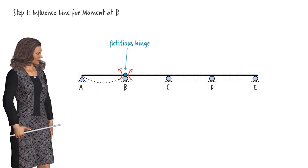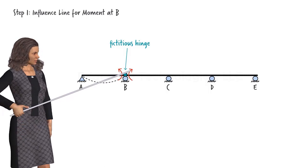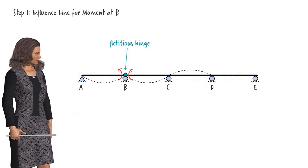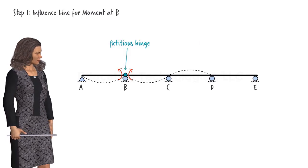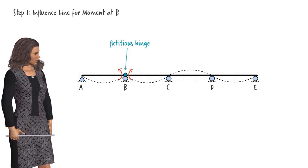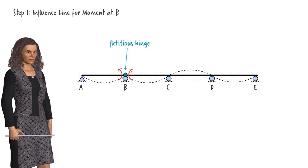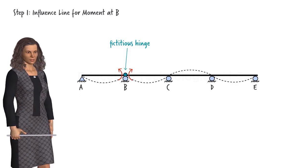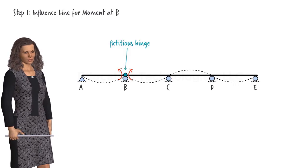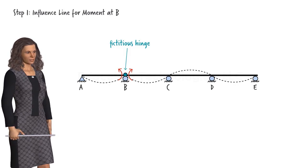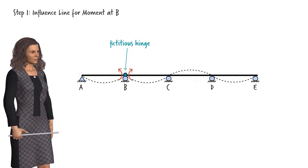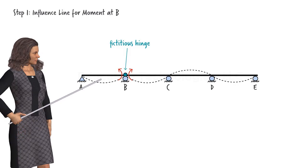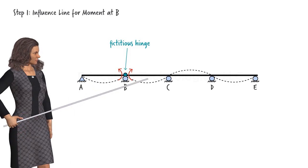The bending moment at the right side of the hinge pushes segment BC down, which causes segment CD to bend upward and segment DE to bend downward. Since the beam is statically indeterminate, the influence line is drawn as a curve. If the beam was statically determinate, the influence line would have consisted of straight line segments only. The diagram tells us that bending moment at B is negative when a load is acting on segment AB, BC, or DE.